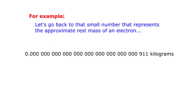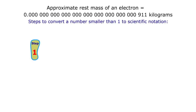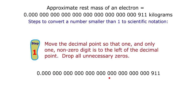For example, let's go back to that small number that represents the approximate rest mass of an electron. Step 1: Move the decimal point so that one, and only one, non-zero digit is to the left of the decimal point. Drop all unnecessary zeros. This gives 9.11.